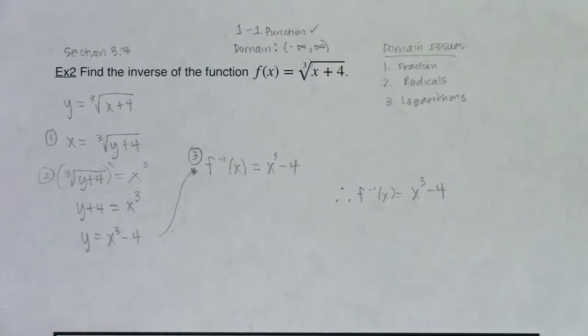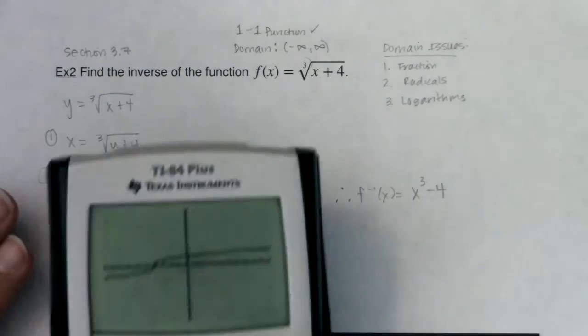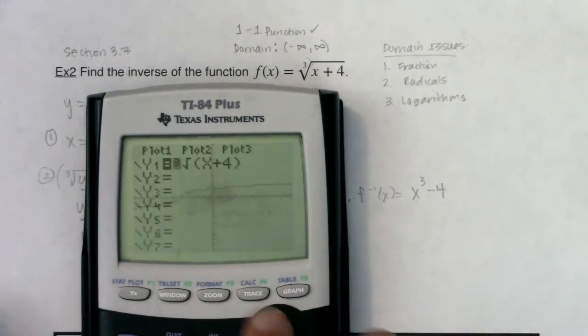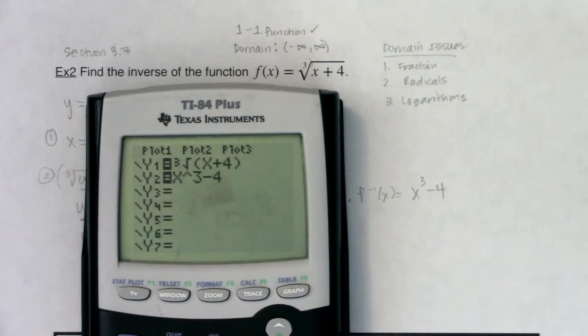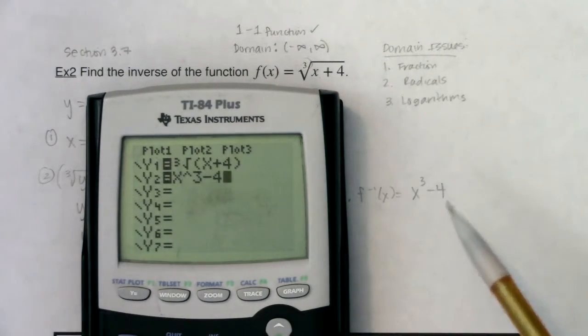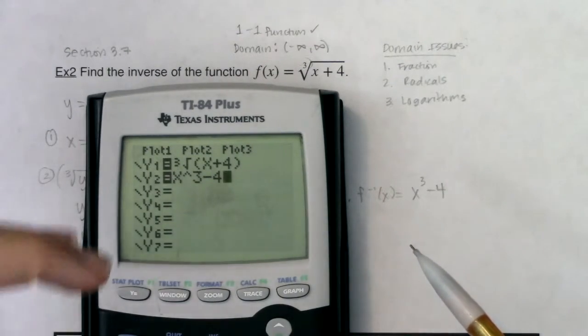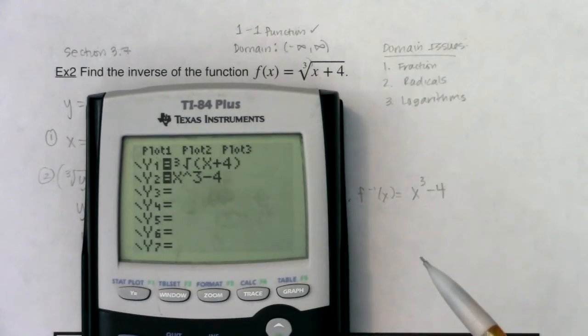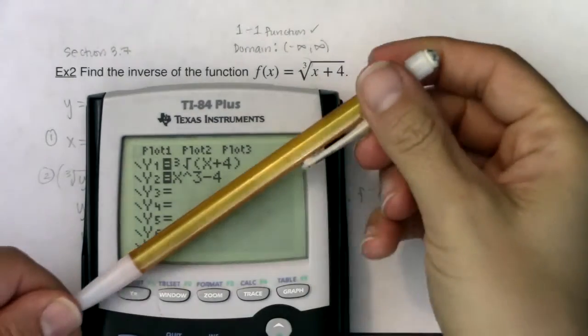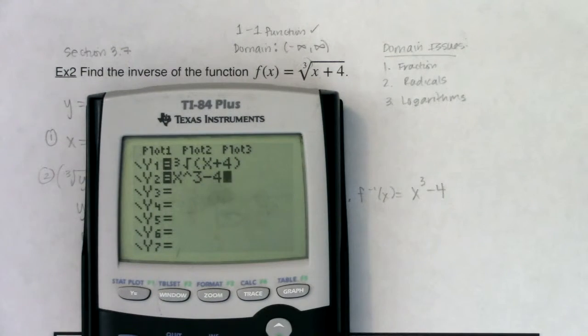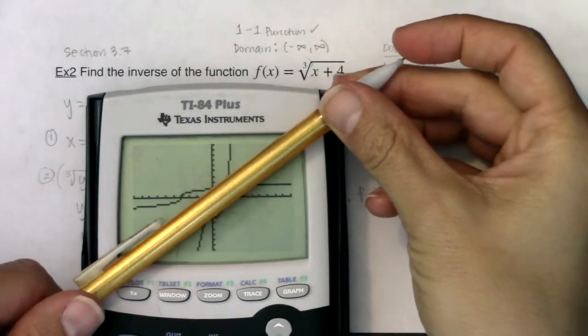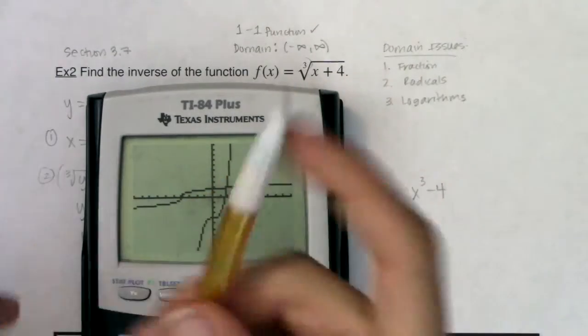If you also remember from that section, we should have a graphical way of identifying inverses. If I go into my y equals and I type in my inverse function x cubed minus 4, I'm going to hit graph in a moment. But if we think back to section 3.7, the graph of a function and its inverse should be symmetric around the line y equals x. y equals x, that diagonal line that cuts this way, should completely cut your graph in half. If I graph this, does it look like there's a line of symmetry along y equals x?